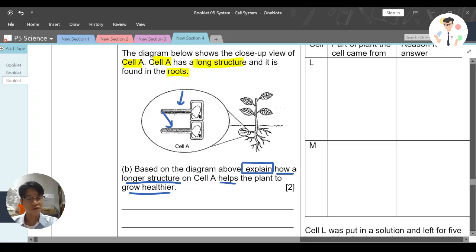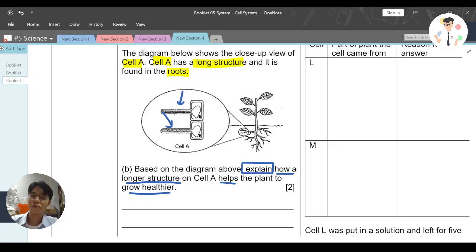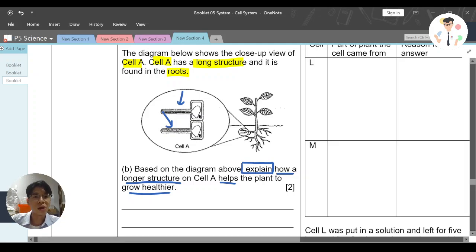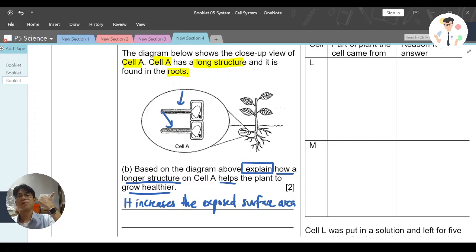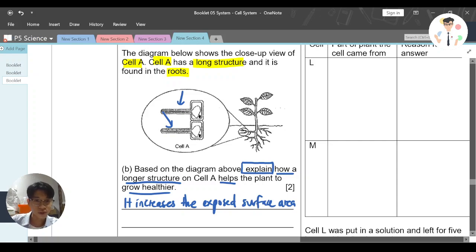I know you guys are very smart, but please do not write longer, that's why absorb more water. I mean yeah, but you need to explain in a more scientific way. When there's longer, it increases what? It increases the exposed surface area. You should know the word that I always use - the exposed surface area. We learned this word in evaporation, in the respiratory system. So you must know this word - it increases the exposed surface area. But this one, increase it for what? In contact with what? In contact with water.